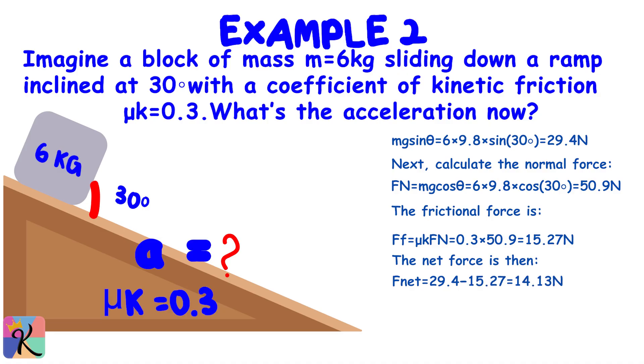The net force is then Fnet = 29.4 - 15.27 = 14.13 newtons. So the acceleration a = Fnet/M = 14.13/6, approximately 2.36 meters per second squared. Notice how friction slows things down.